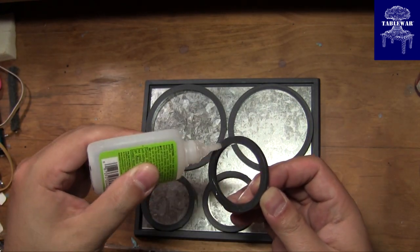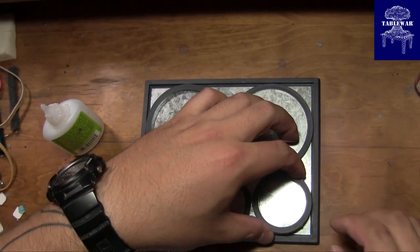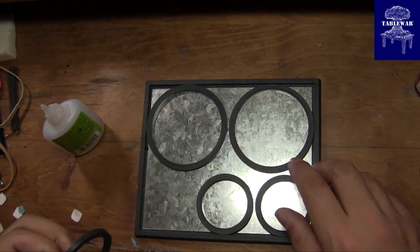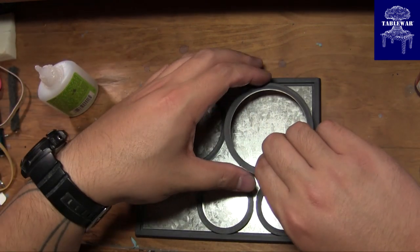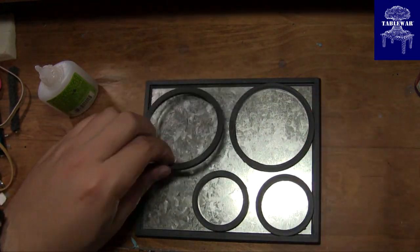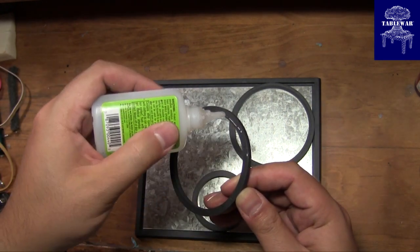Once you have something that you like, it's time to glue everything in place. If you have a bigger tray or you're using the discs for a diorama or display board, it might help to use a sharpie to mark the outlines of the rings so you know exactly where to place them.